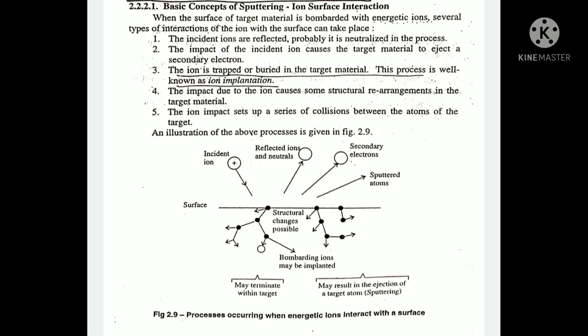Basic concepts of sputtering: ion-surface interaction. We can use the target material on the surface. We can use sputtering or kinetic ejection using these methods.